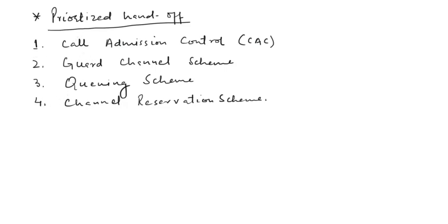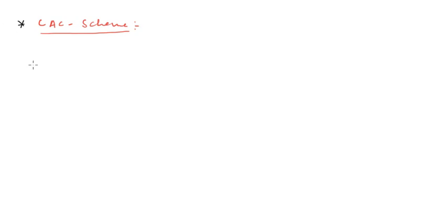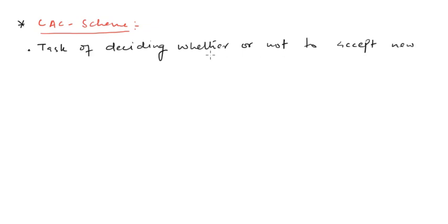First we will take the call admission control scheme, that is CAC. The call admission control scheme is basically the task of deciding whether to take a new call request or not. It refers to the task of deciding whether or not a certain connection request will be admitted into and supported by the network. These schemes restrict the number of new calls accepted to decrease the probability of handoff call failure.